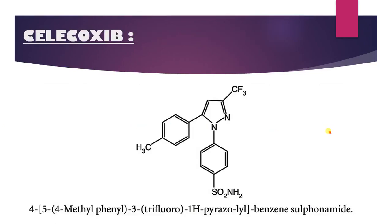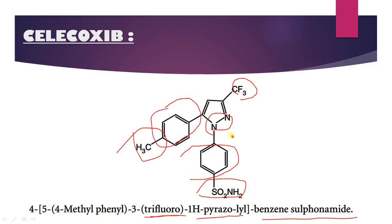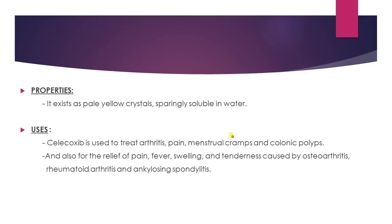Example is celecoxib. It contains a benzene sulfonamide group — this is the benzene, this is the sulfonamide — and a pyrazole ring (1,2,3-pyrazole). It is sparingly soluble in water. Uses: it is used to treat arthritis, pain, menstrual cramps and colonic polyps.